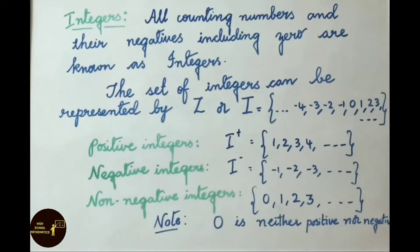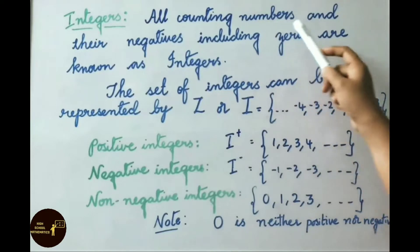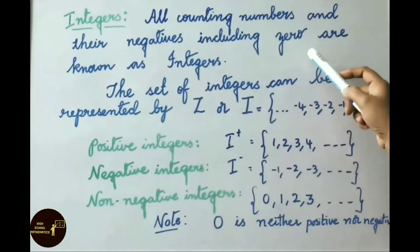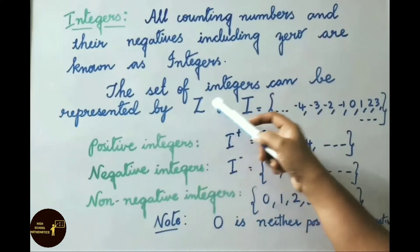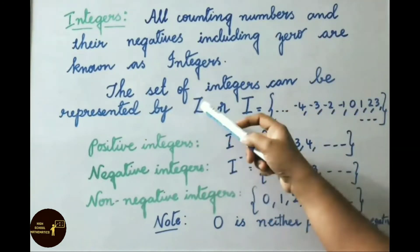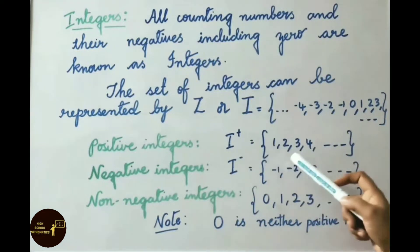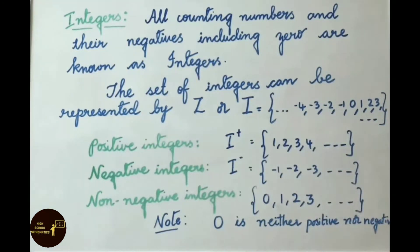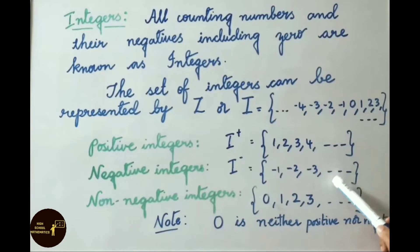Now let us see what are integers. All counting numbers and their negatives including 0 are known as integers. The set of integers is represented by capital letter Z or I = {..., -2, -1, 0, 1, 2, 3, ...}. Positive integers are {1, 2, 3, 4, ...} and negative integers are {-1, -2, -3, ...}.